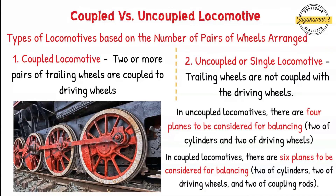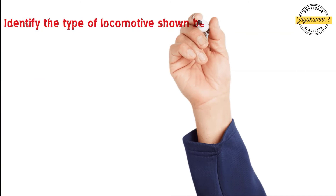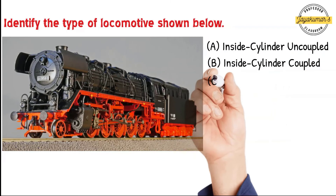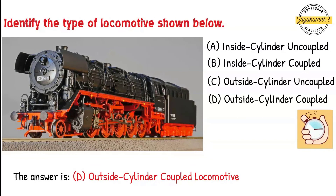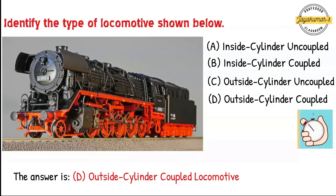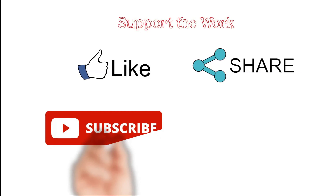We will cover these interesting topics in forthcoming classes. Now, can you identify the type of locomotive shown in the diagram? Yes — the shown diagram is an outside cylinder coupled locomotive. As you can see, the cylinder is placed outside the driving wheel, and all the wheels are coupled using a coupling rod. That's it — hope you found this video very useful. Thanks for watching, take care, bye.